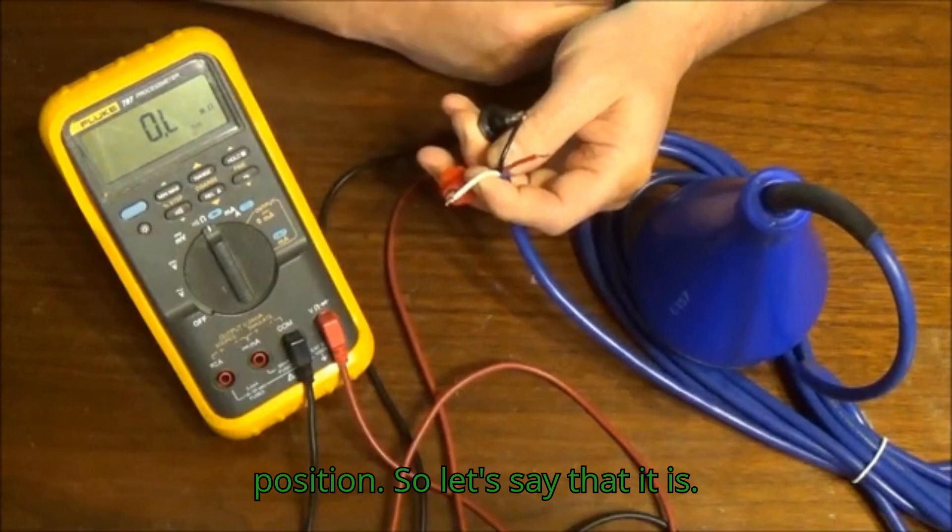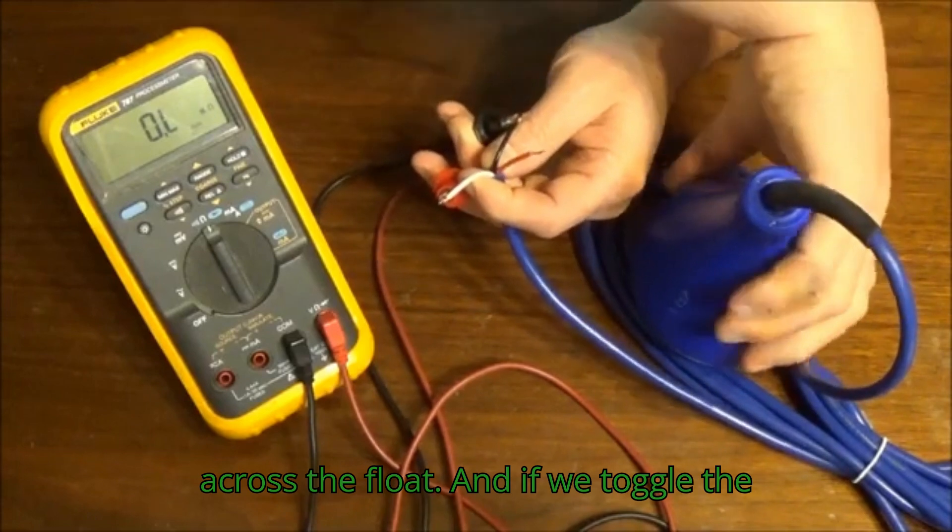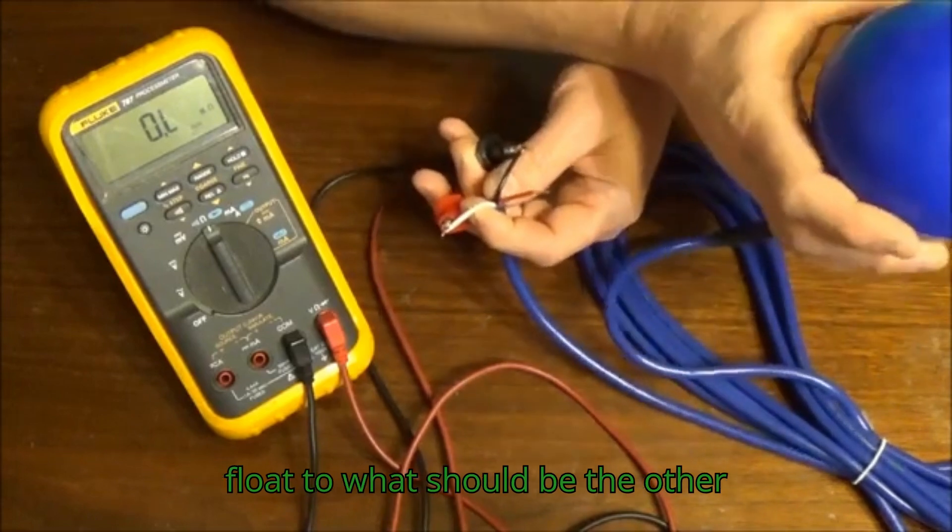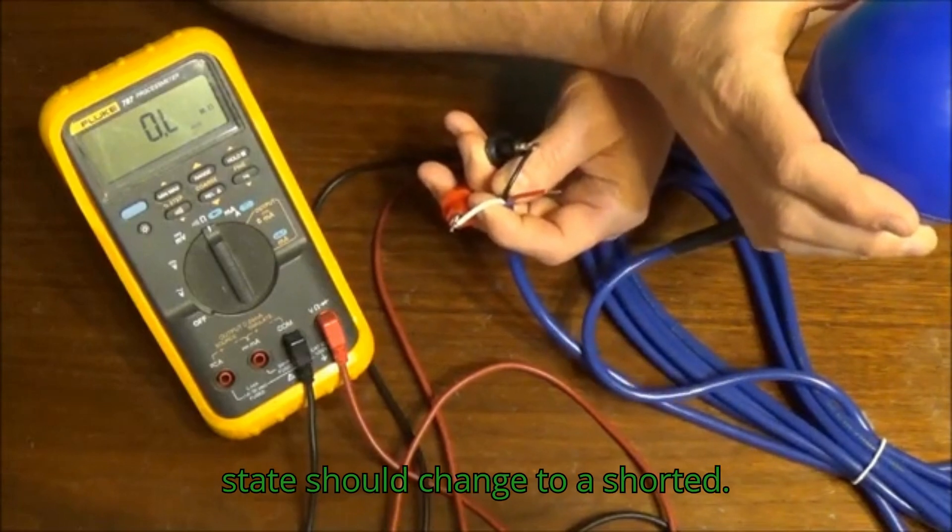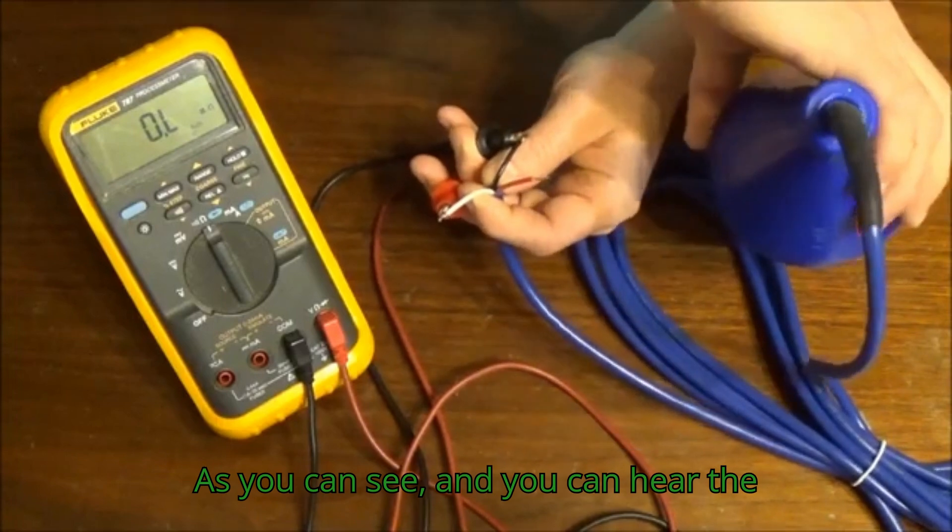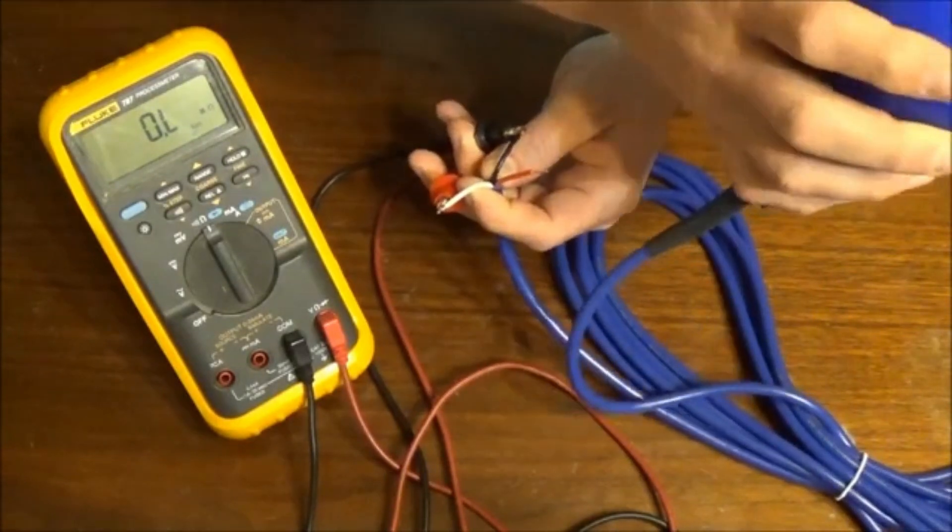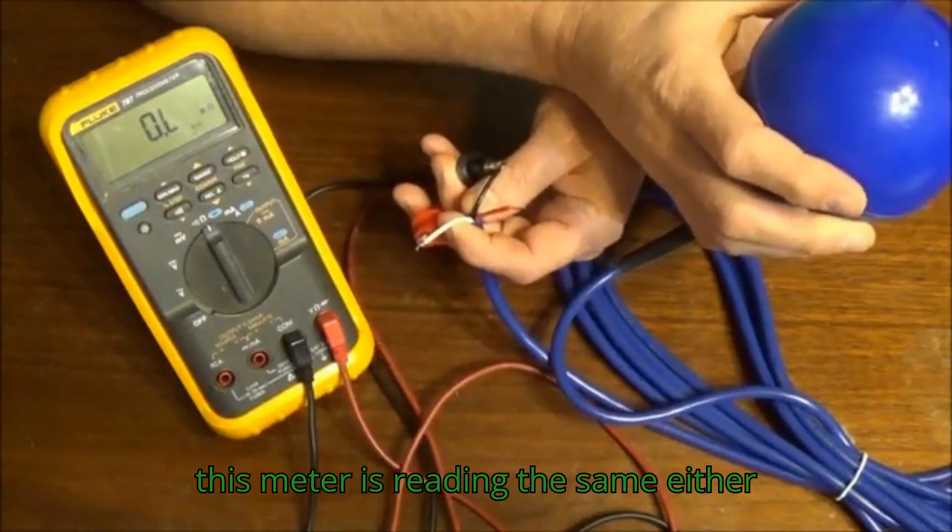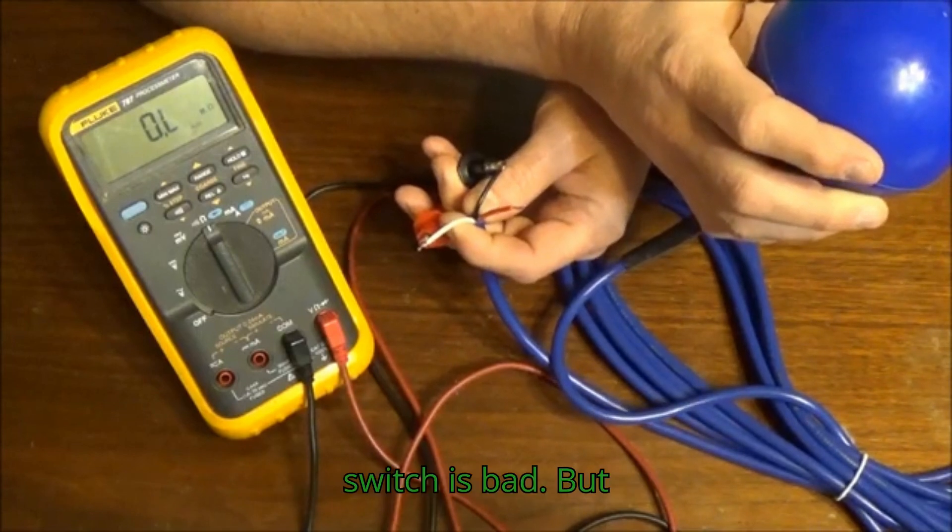Let's say that it is. We've got the leads measured across the float. If we toggle the float to what should be the other condition or opposite condition, that state should change to a shorted. As you can see and hear the switch toggling, this meter is reading the same either way, indicating that the float switch is bad.